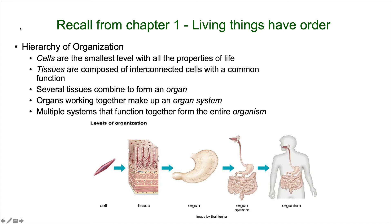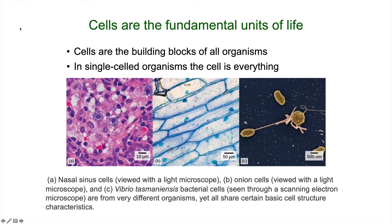Before the cell level, we didn't have all those properties. Then we used cells in multicellular organisms to make tissues, put tissues together to make organs, organs together to make an organ system, and then multiple organ systems to form the organism. So cells are the fundamental units of life and the building block of all organisms.